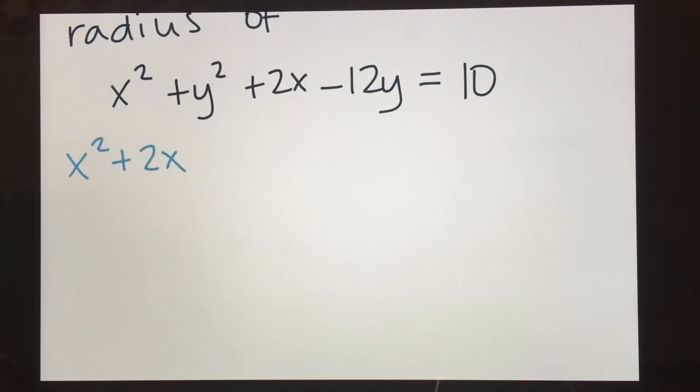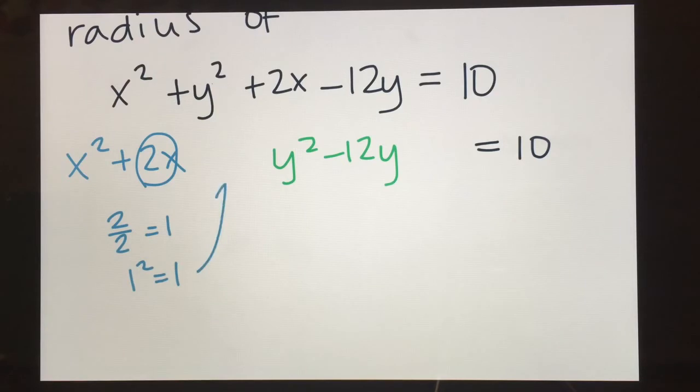So there's my x's. And then I've got my equal 10 over here. All right. So first I'm going to complete the square with the x's. So I've got 2 divided by 2 is 1. 1 squared is 1. And so that 1 goes up here. Since I added 1 to the left side of the equation, I'm going to go ahead and add 1 to the right side of the equation.